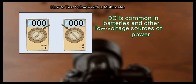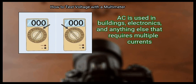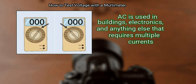DC is common in batteries and other low voltage sources of power. AC is used in buildings, electronics, and anything else that requires multiple currents.